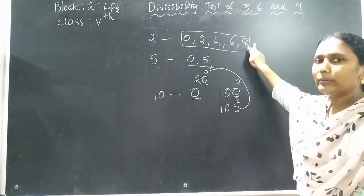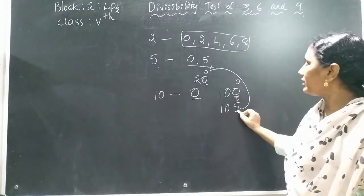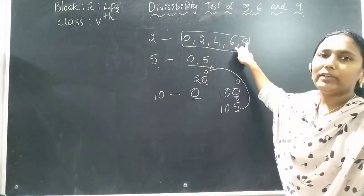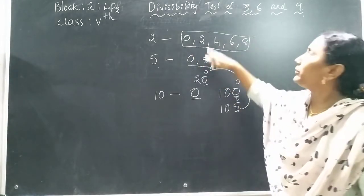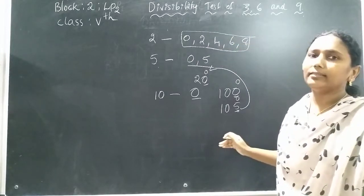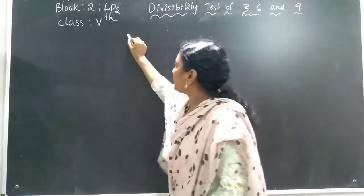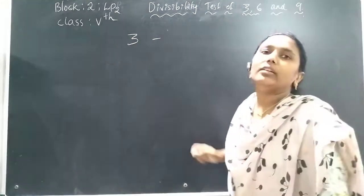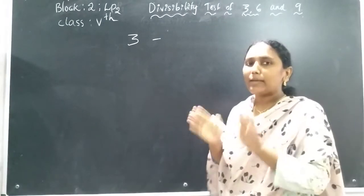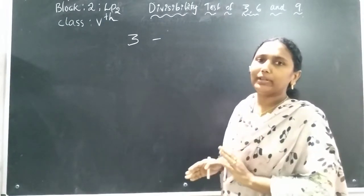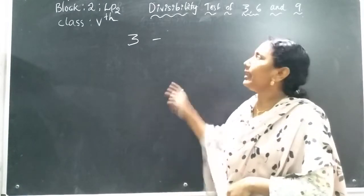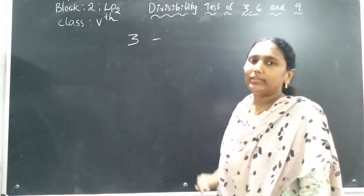Is 105 divisible by 2? No, because the ones place does not have 0, 2, 4, 6, or 8. Today we will learn the divisibility test for 3, 6, and 9. For divisibility by 3, a number is divisible by 3 when the sum of its digits is divisible by 3 — that is, when the digit sum is in the table of 3.